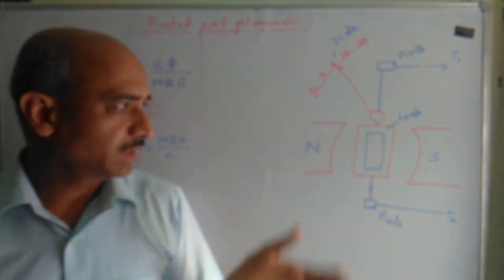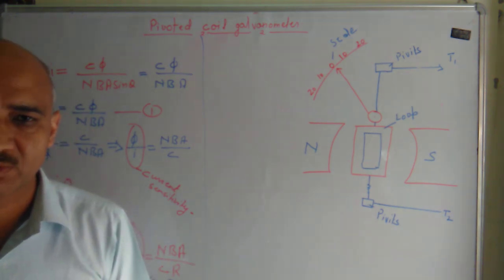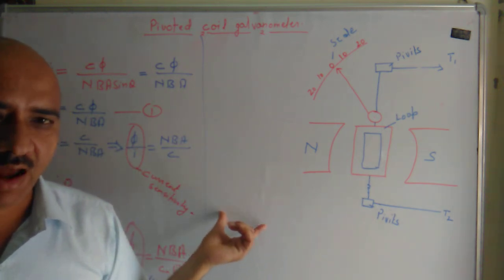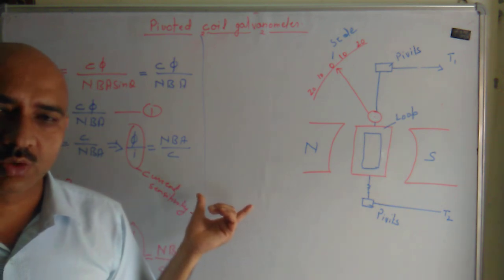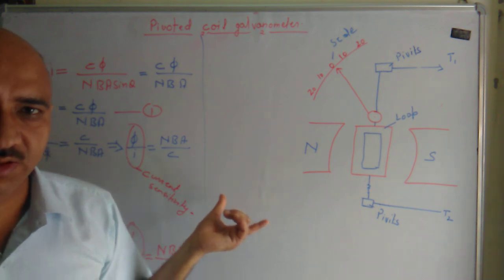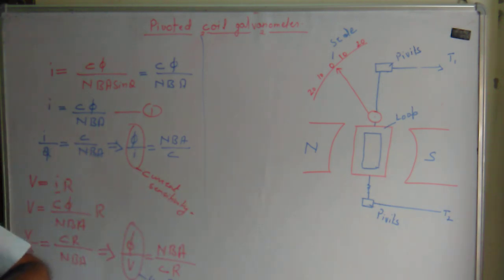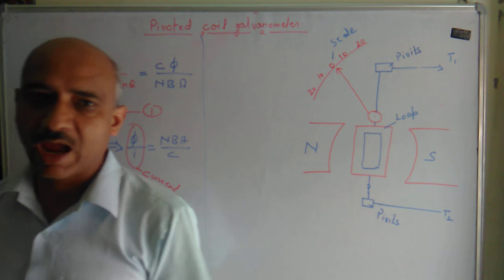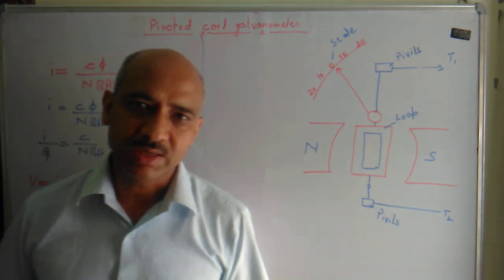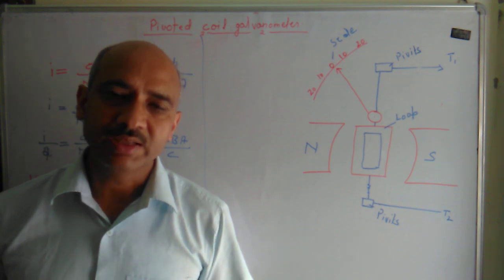This is all for today. We have done the suspended galvanometer and today we did the pivoted type galvanometer. Please go through it, and if you have any problem you can ask me. In the next video we are going to discuss how to convert an ammeter into a galvanometer, and how to convert a galvanometer into a voltmeter. Thank you very much.